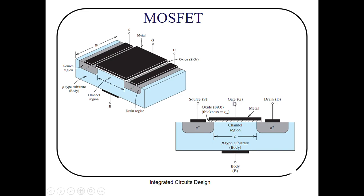You apply gate voltage at the gate terminal and drain voltage at the drain terminal, and control the current between source and drain. In the perspective view of the MOSFET, you can see the source diffusion and drain diffusion — both are N-plus diffusion — with a P-type substrate, the channel region, channel length, and the body terminal. This is the basic and simple structure of MOSFET.